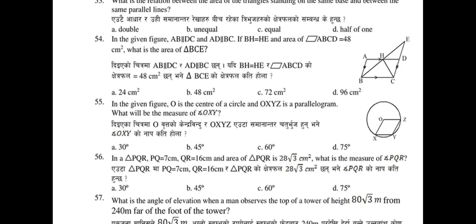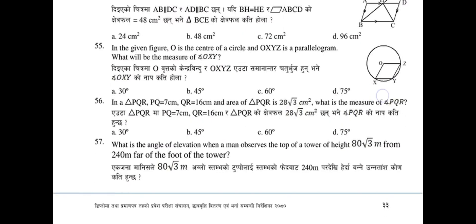Question 55: In the given figure, O is the center of the circle and OXYZ is a parallelogram. What will be the measure of angle OXY? Select the correct answer from ABCD. Question 56: In triangle PQR, PQ equals 7 cm, QR equals 16 cm, and the area of triangle PQR is 28√3 cm².